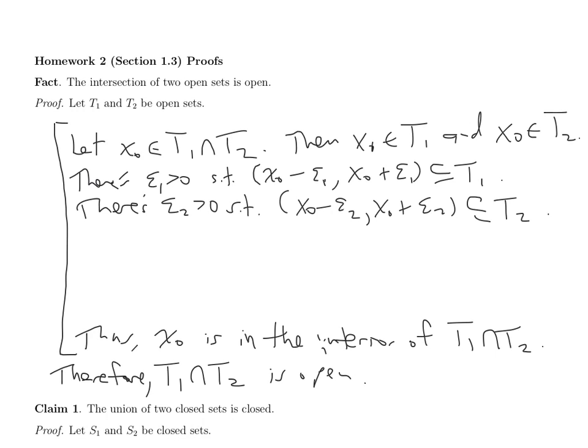I start to see how there might be a neighborhood of X0 that I can argue is in the intersection. But these two neighborhoods aren't the same neighborhood. If they were the same, then I would know that neighborhood is in the intersection because it's a subset of both. But these aren't necessarily the same.